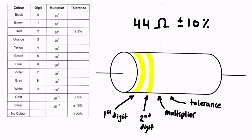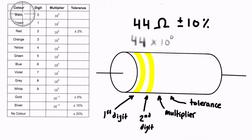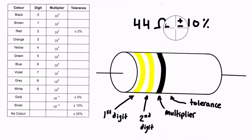For the multiplier, we have two digits 4 and 4, giving us 44. What do we have to multiply 44 by to get 44? It's a trick question — we multiply by 10 to the 0, which is basically multiplying by 1, so it doesn't change. Looking for 10 to the 0 in the table, it's going to be a black band, so we draw that on as our third band.